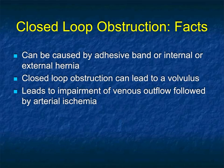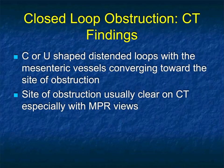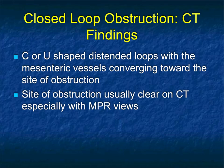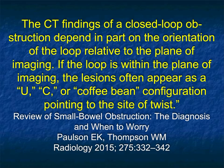When you talk about closed-loop obstruction, adhesive bands or internal or external hernias are the things we think about. Closed-loop obstruction can lead to volvulus, which can lead to impairment of venous outflow, followed by arterial ischemia and bowel infarction. With closed-loop obstructions, we look for a C or U-shaped positioning of the distended loops of bowel with the mesenteric vessels converging toward the site of obstruction. The site of obstruction is usually clear on CT, particularly the MPR coronal views. A closed-loop obstruction depends in part on the orientation of the loop relative to the plane of imaging — if the loop is within the plane of imaging, you'll see the C or U, but otherwise you may not.